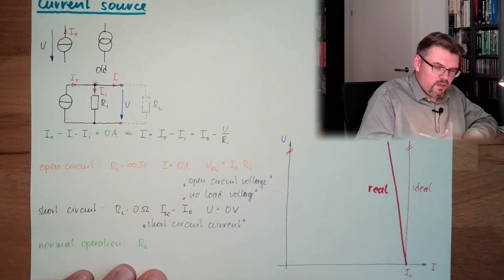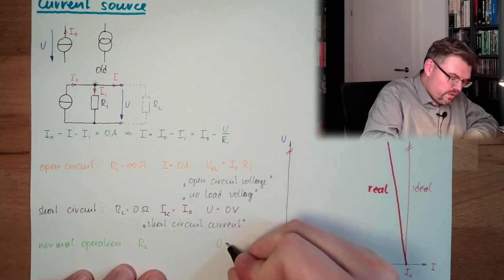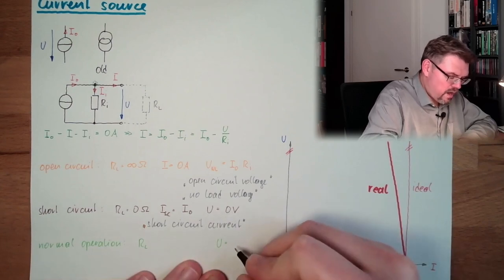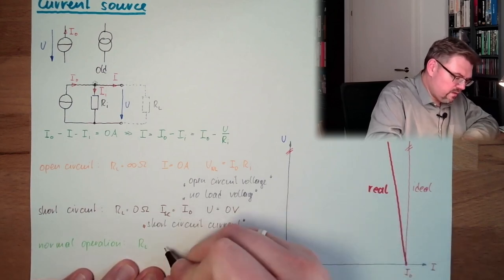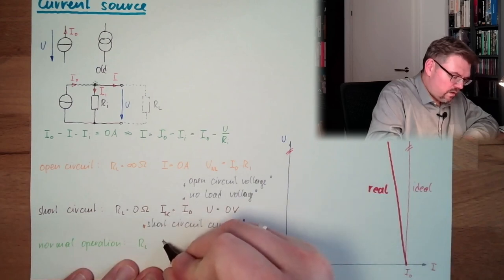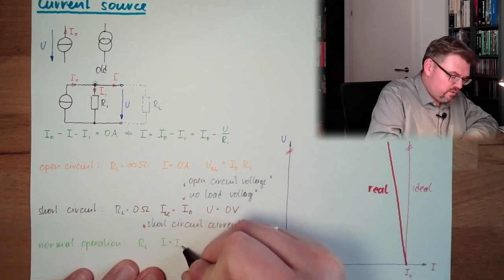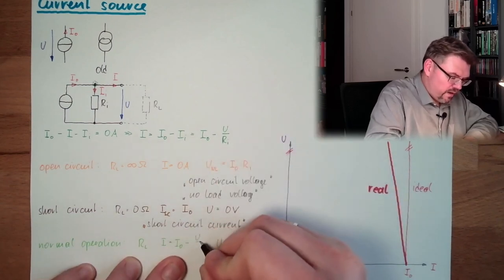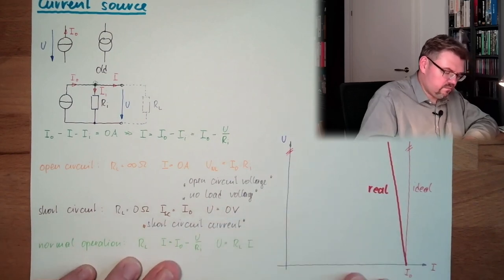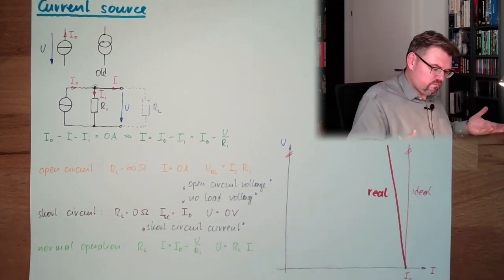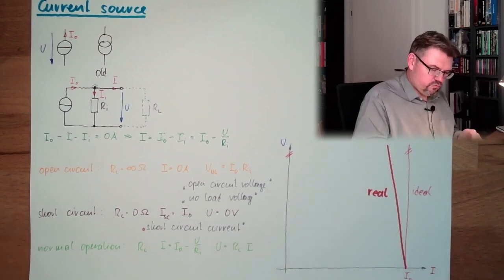The voltage U equals I multiplied by RL. And, I equals I0 minus U divided by RL. That's it, that's normal operation. RL is just this line.